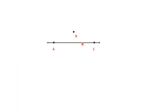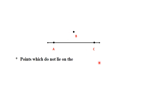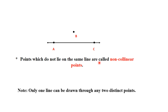But if any point is out of the line, then these points are called non-collinear points. The points which do not lie on the same line are called non-collinear points. Note that only one line can be drawn through any two distinct points. If we have two points like point A and point C, then we can draw only one line using these two points.